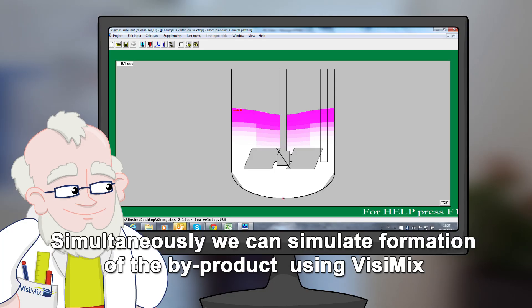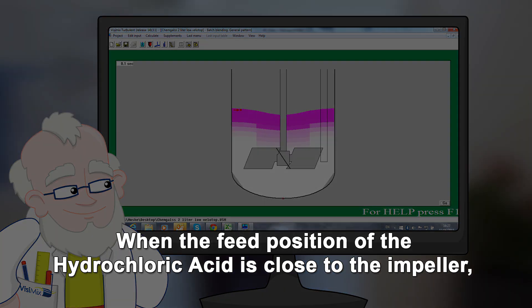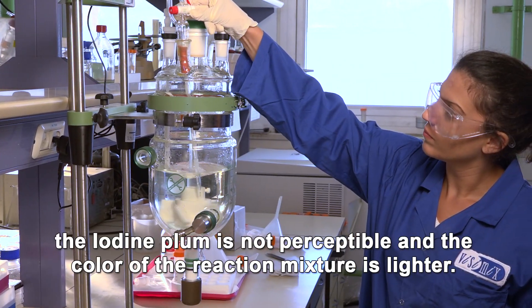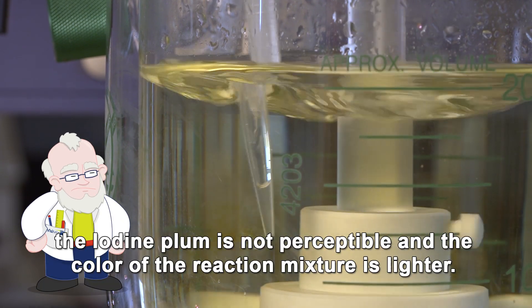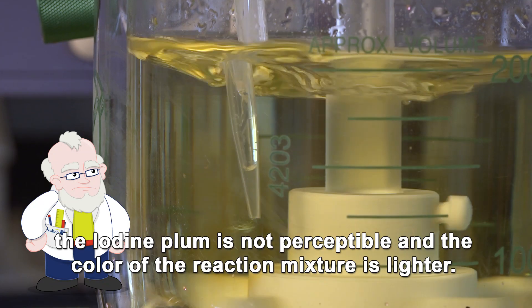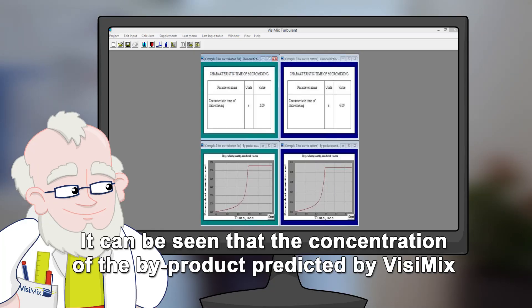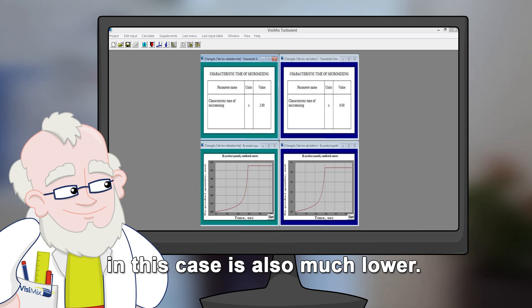Simultaneously, we can simulate formation of the by-product using Vizimix. When the feed position of the hydrochloric acid is close to the impeller, the iodine plume is not perceptible, and the color of the reaction mixture is lighter. It can be seen that the concentration of the by-products predicted by Vizimix in this case is also much lower.